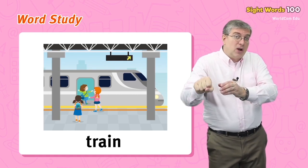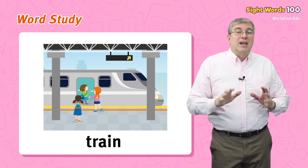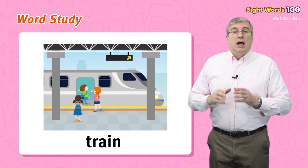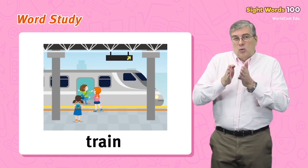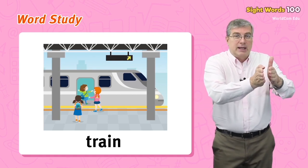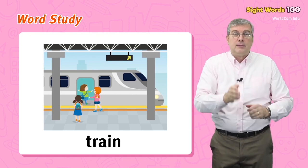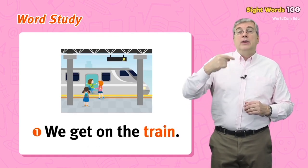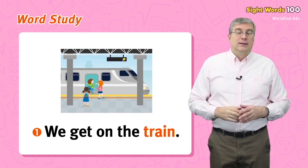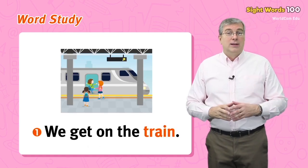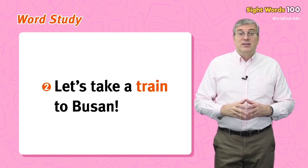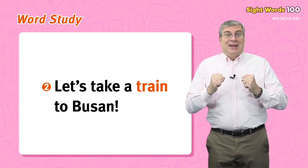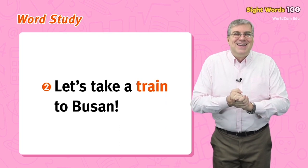A train is a very long vehicle with many cars. It is pulled from the front by a very powerful engine and runs along a track. For example, we get on the train, or let's take a train to Busan.